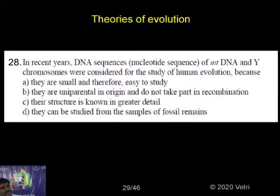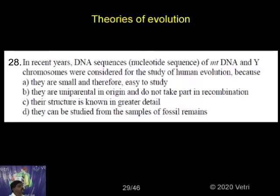The question asks why nucleotide sequences of DNA and Y chromosomes were considered for the study of human evolution. Option A: they are small and therefore easy to study. Option B: they are uniparental in origin and do not take part in recombination. Option C: their structure has greater detail. Option D: they can be studied from samples of partial remains.